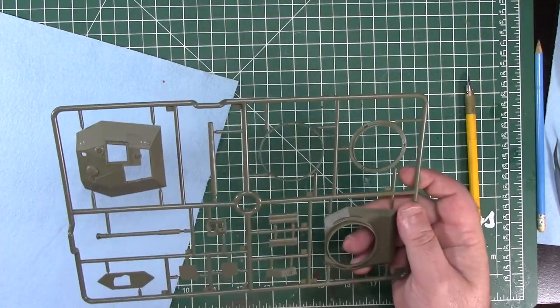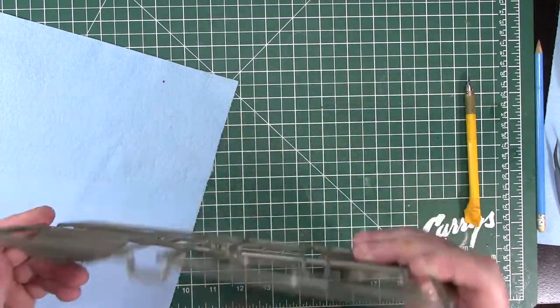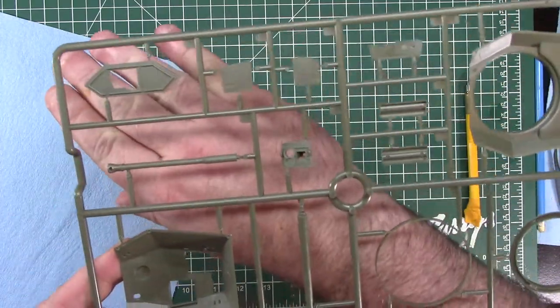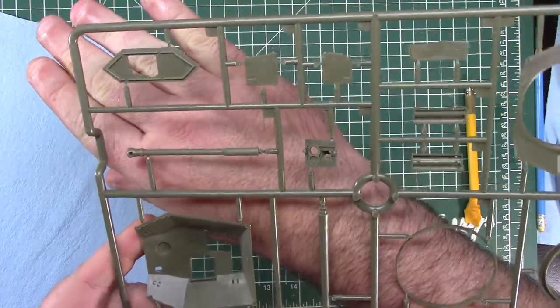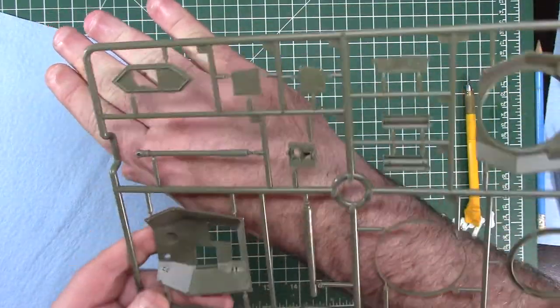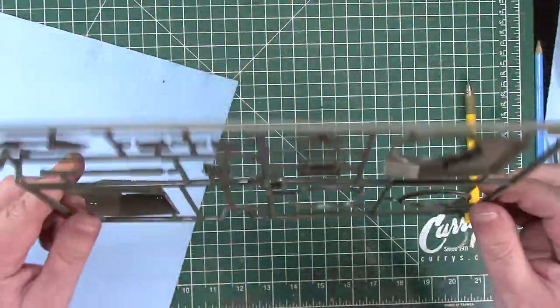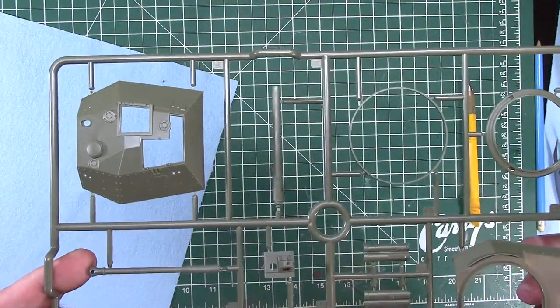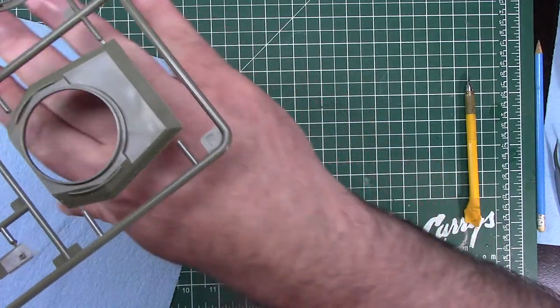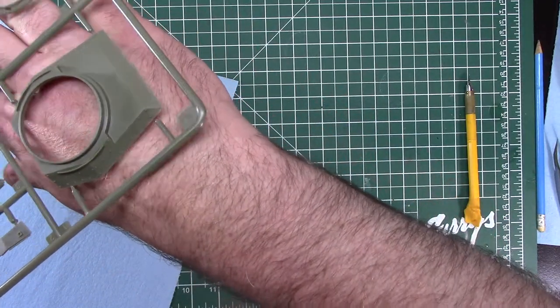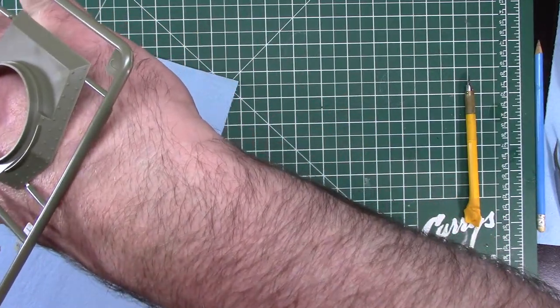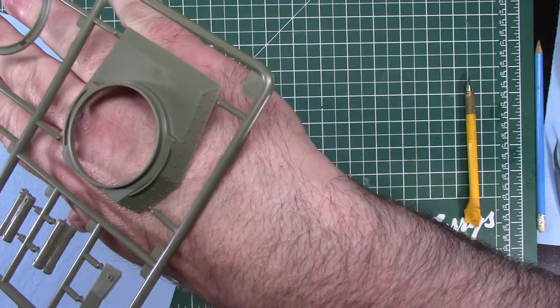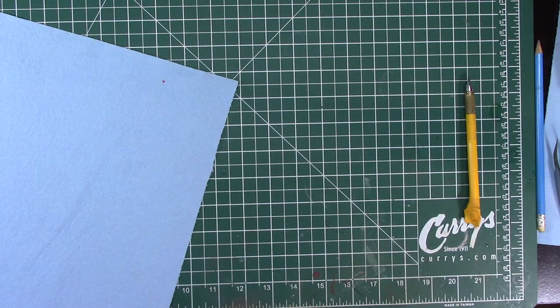There's the turret, it's a one piece molding for the gun, it looks pretty good. The turret top, bottom of the turret, lots of rivets. I suspect they may be a little bit large for the scale but it doesn't matter too much.